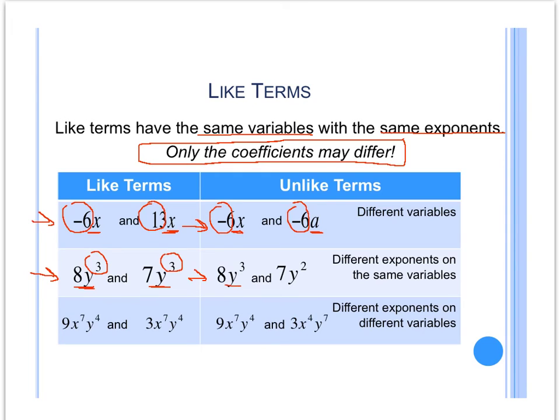Looking at this one, we check. They both have a y. However, don't forget to check that exponent. One is y to the third, while the other is y to the second. Therefore, those different exponents on the variable make them not like terms.